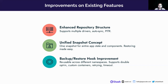The next improvement is the hook. We have introduced a new CRD called Hook Template, which is reusable across different namespaces. It also supports double opt-in and you can run custom containers in a job as a hook. The hook also has a retry feature and a timeout feature — if hook execution fails for some reason, it can be retried. And if the hook execution is not completed within a set timeout period, it can be set to failed.